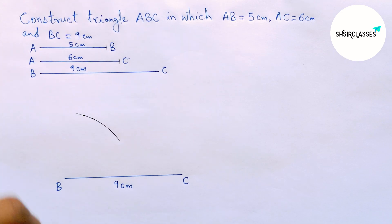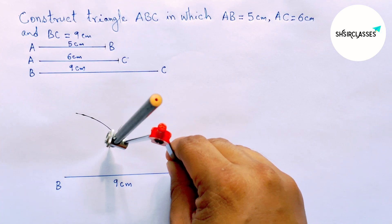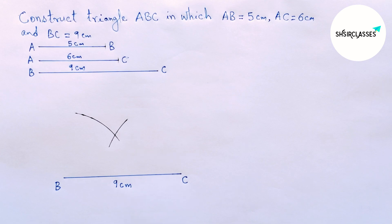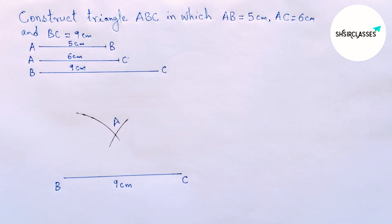Now putting the compass on the point C and cut the arc here at a point. So taking here A.